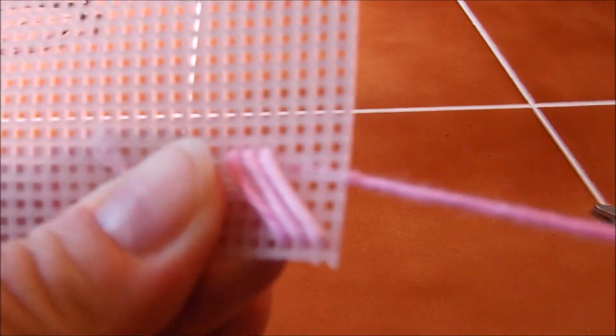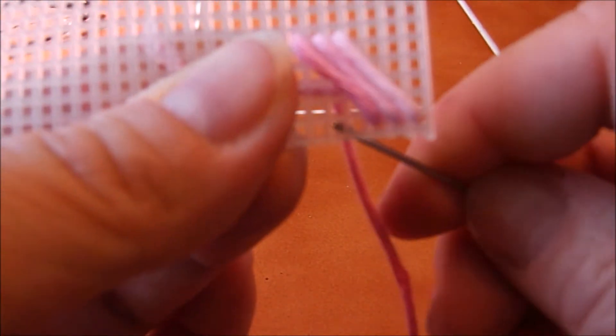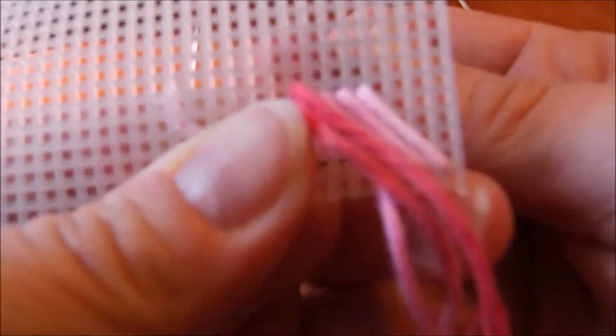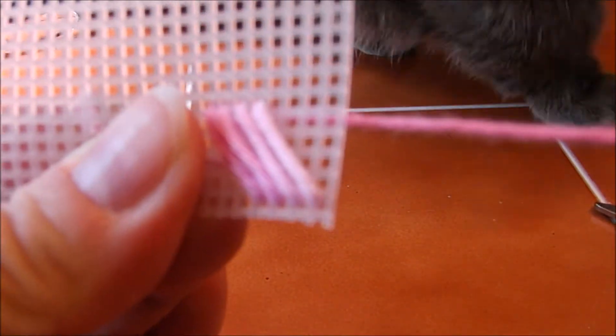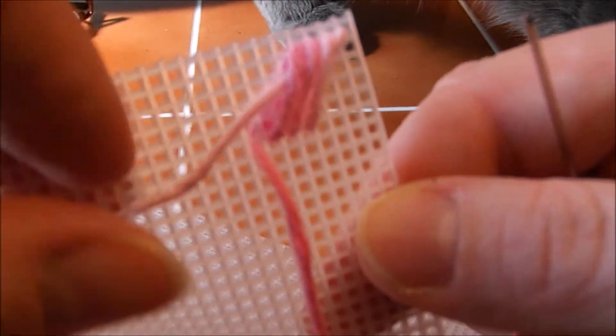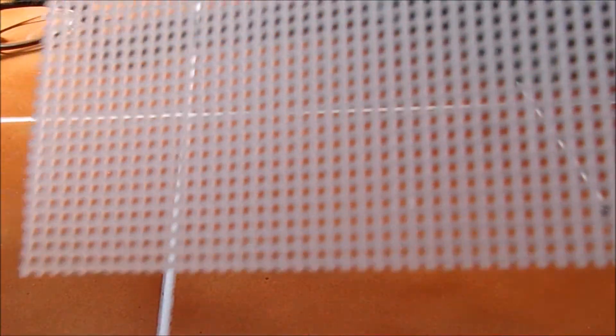And you can see it's getting a nice gradient as you go. And up, down. Very easy, very straightforward. And again, you're catching your starting thread in the back. So I'm going to do that for this entire row of the plastic canvas.